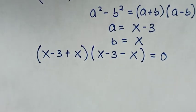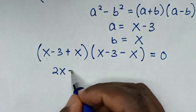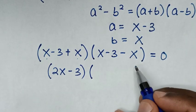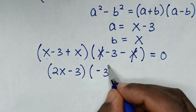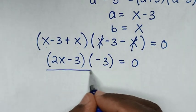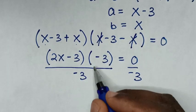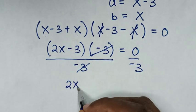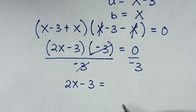In the next step, in the first bracket x plus x gives 2x, and in the second bracket x minus x is 0, so those cancel, leaving negative 3. This gives us 2x minus 3 times negative 3 is equal to 0. We then divide both sides by negative 3, which cancels, giving 2x minus 3 is equal to 0.